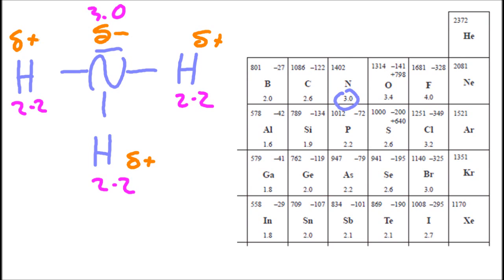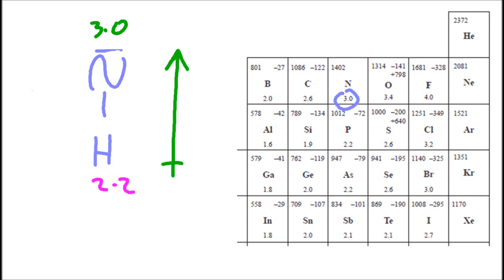So the little delta means a little bit. So delta plus is a little bit plus. And that arrow, you can see the arrow also has a plus to show where the positive end of that dipole is in that bond. So the nitrogen-hydrogen bond is also polar.